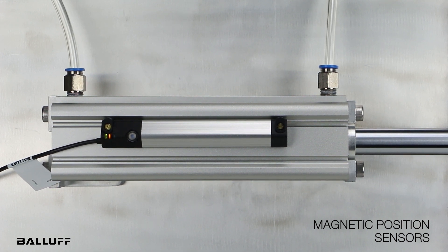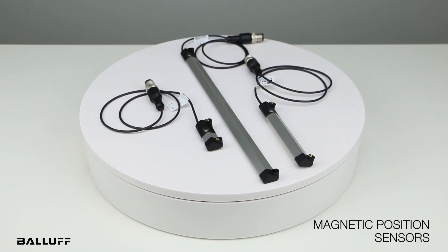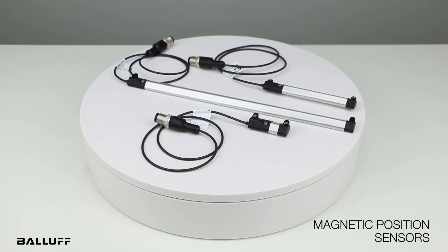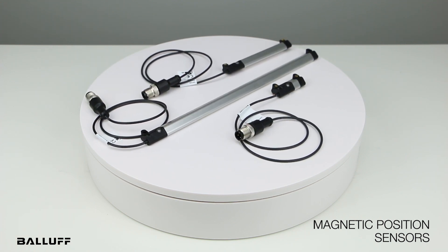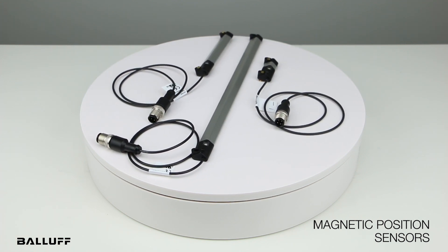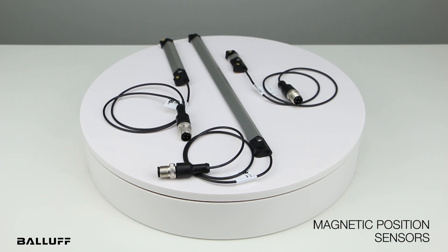The BMP magnetic position sensors are available in eight different measurement ranges from 32 to 256 millimeters in 32 millimeter increments. You can also customize the measuring range along the entire stroke using the teach function.